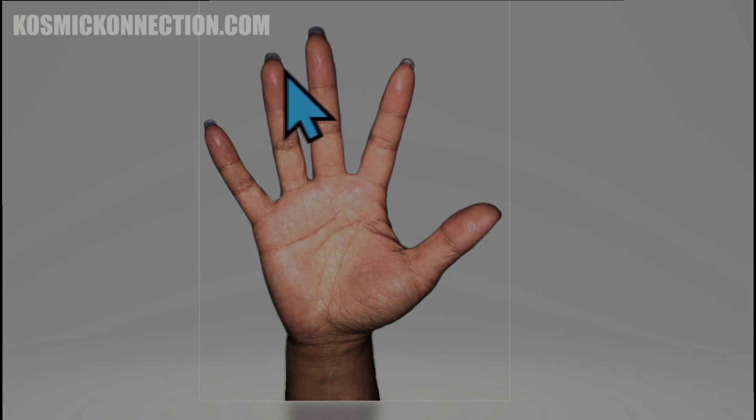But besides that, you've got two lines coming up from the palm into that finger. They're called creative achievement lines. That means sometime in your life, you're going to have some major creative achievements.